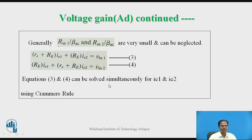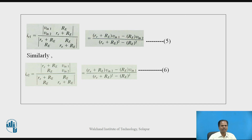Using Cramer's rule, we can write the equation for I1: I1 = [(RE + RE)·VIN1 − RE·VIN2] / [(RE + RE)² − RE²]. Similarly, the equation for I2 is: I2 = [(RE + RE)·VIN2 − RE·VIN1] / [(RE + RE)² − RE²].